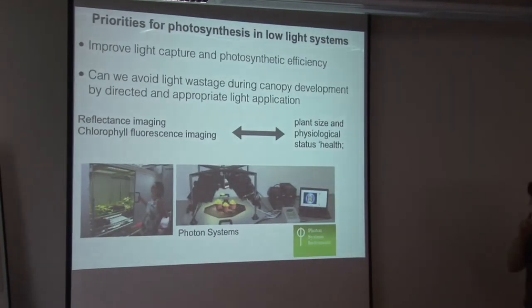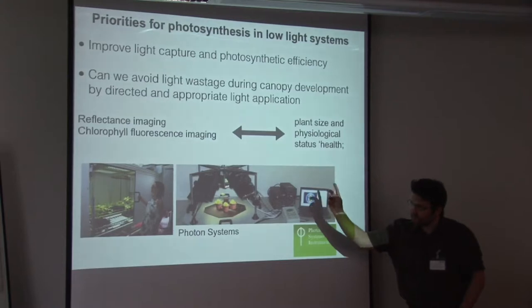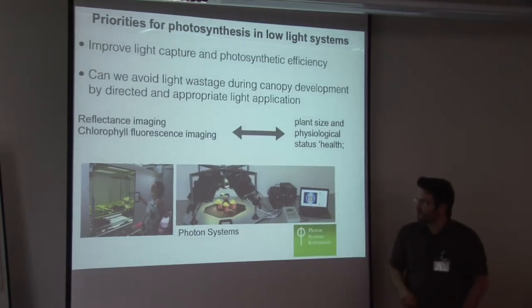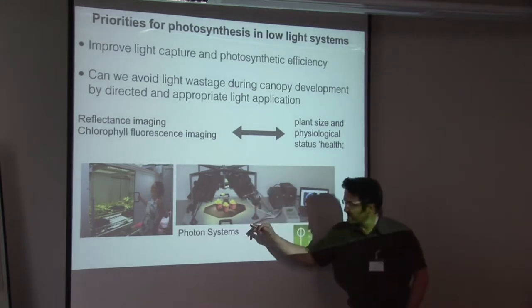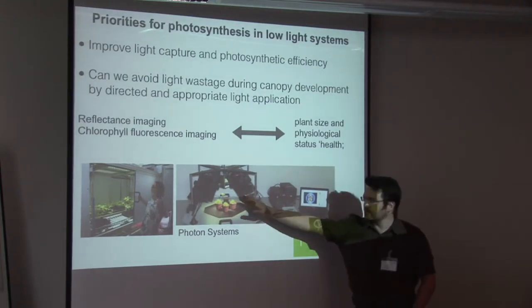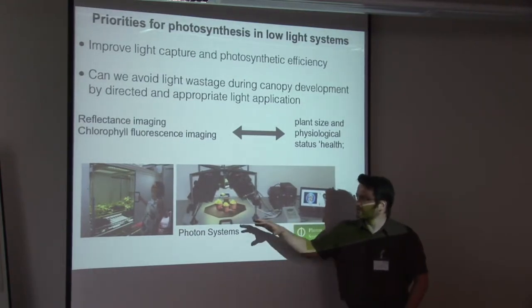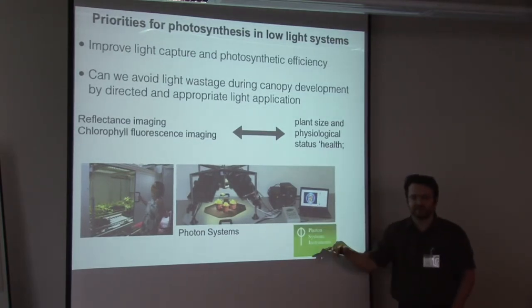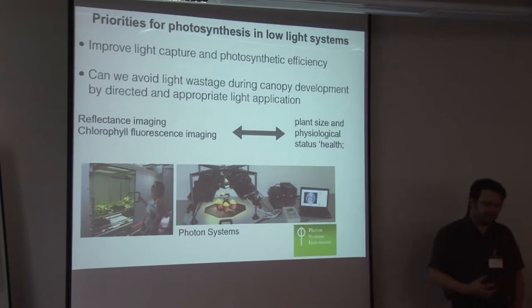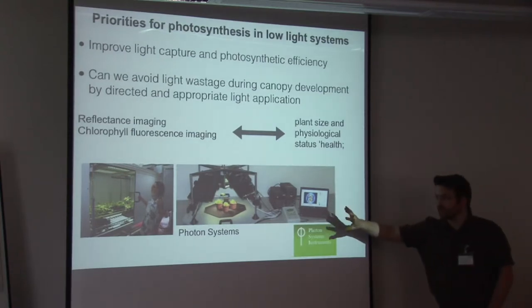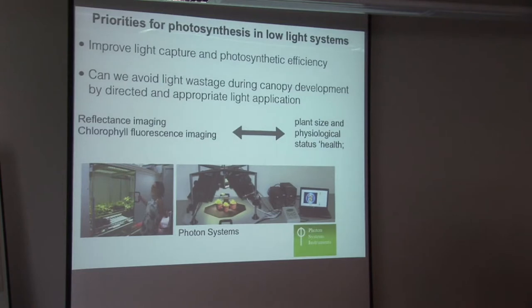This is a typical fluorescence imaging system, again made by Photo Systems Instruments. And this system here effectively is applying, it's an experimental system, it's not for growing plants, but it's applying an actinic light and measuring chlorofluorescence. So you can image the entire plant, the fluorescence will be given up by the entire plant. And this will give you an indication of variation in photosynthetic efficiency, and also if you have disease it will show up.